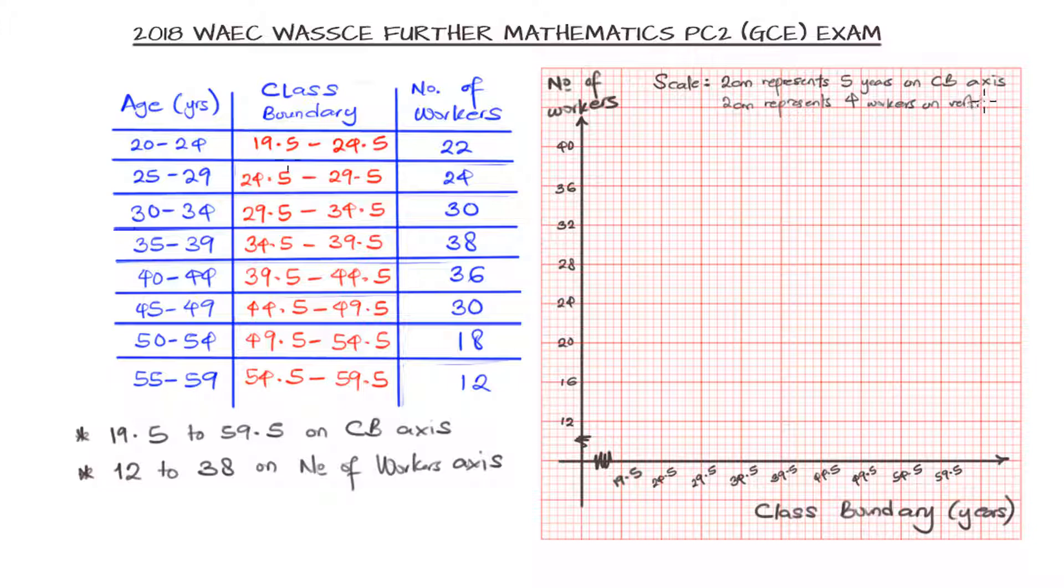With this, we can now go ahead to say we want to plot our histogram so that we can estimate the mode from the histogram. Now, for the number of workers we have 22, and the class boundary we have 19.5 to 24.5. So 22 is in between 20 and 24. Then 19.5 to 24.5 is as shown, and we can just draw our bar.